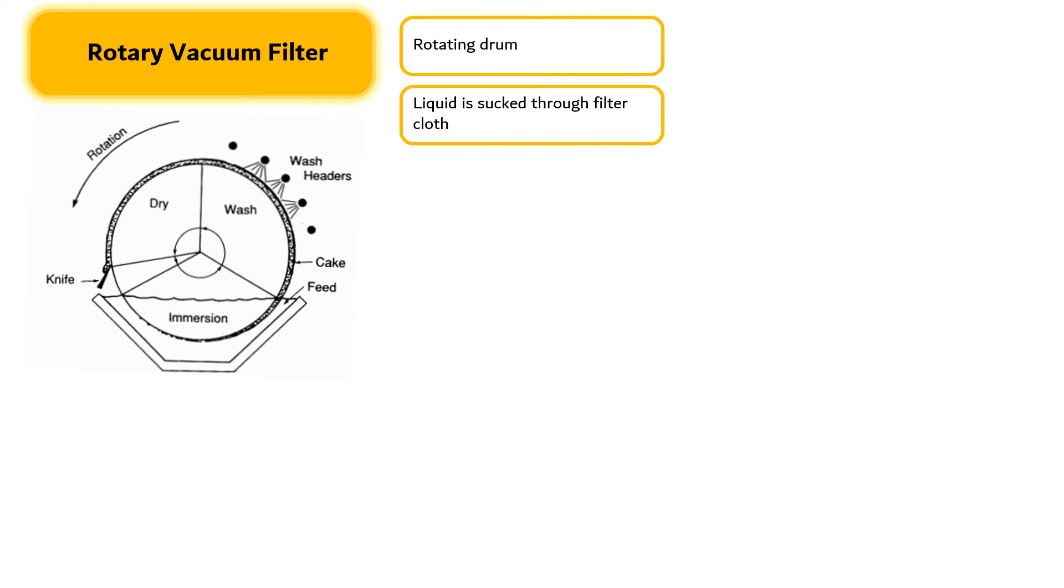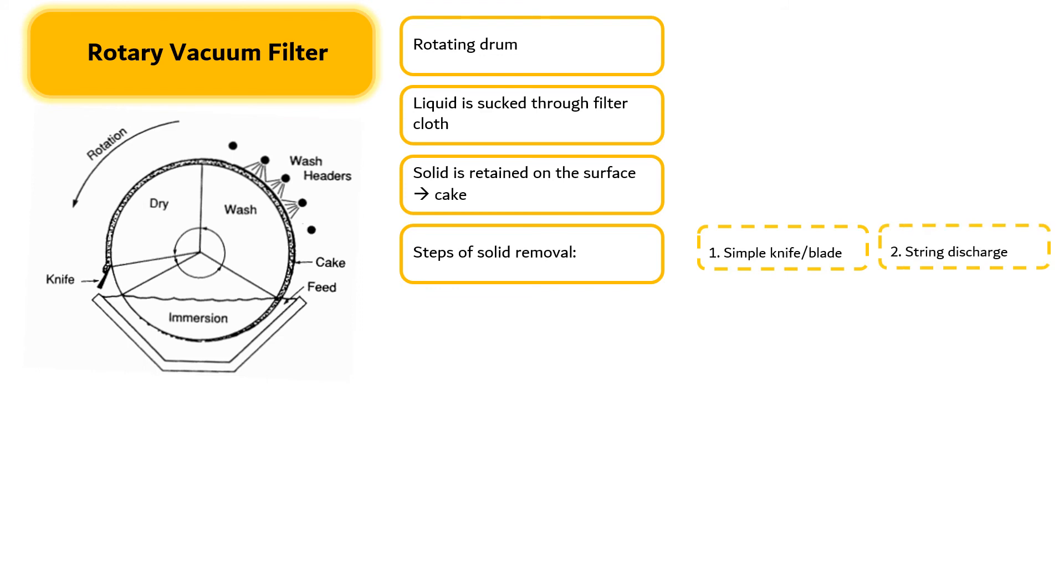When the cake rotates out of the beer, it is washed, dried, and removed. It is the shape of solid removal which varies most widely. A simple knife is implemented by an air blow back through the filter medium. Second, string discharge also assisted by the release of vacuum and a small blow back. Third, a continuous belt discharge where a filter medium moves around a series of rolls. Fourth, continuous rotary vacuum pre-coat filter.